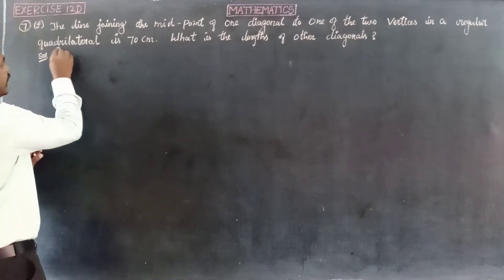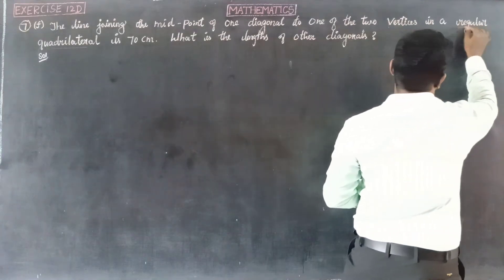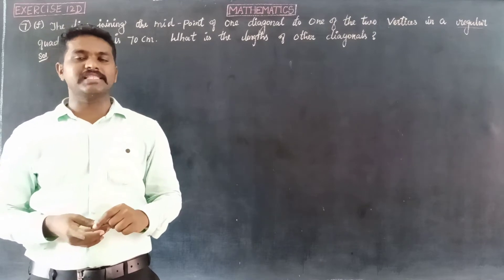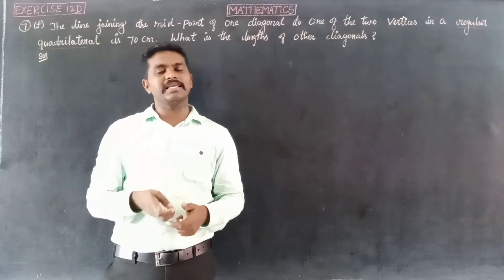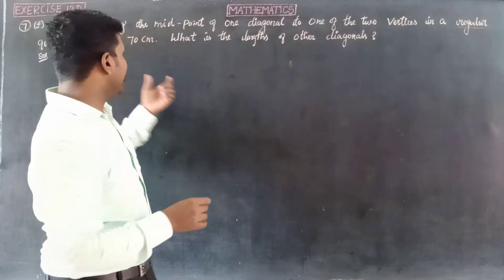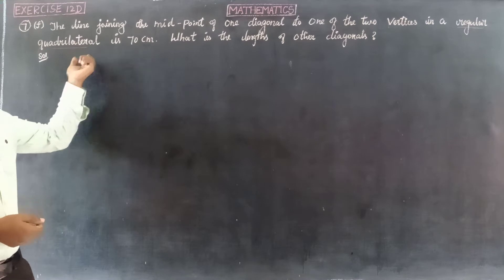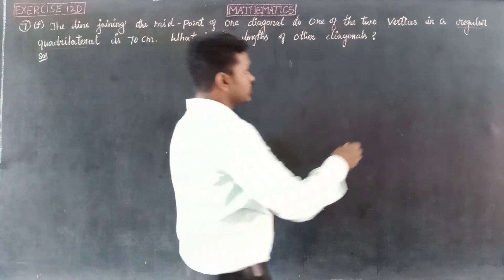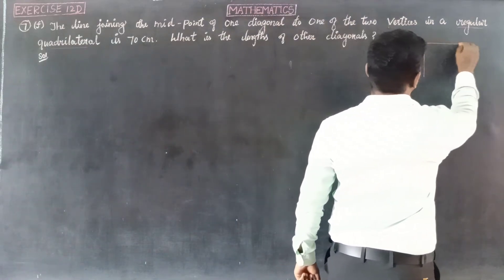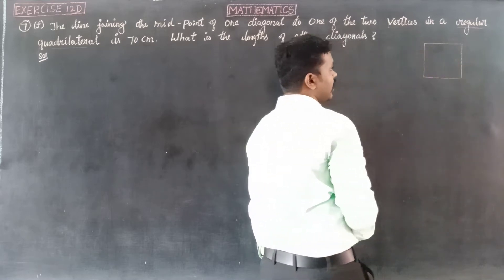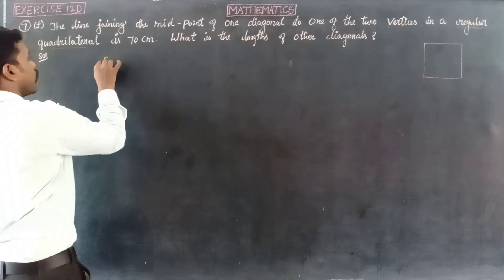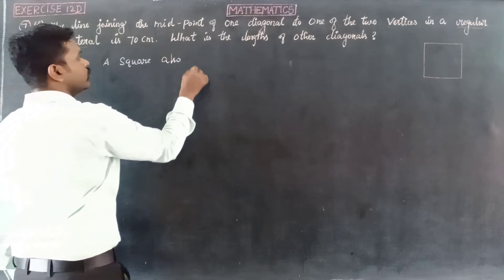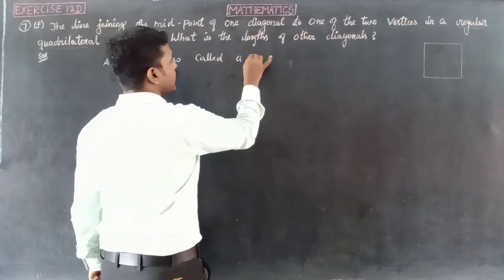A very important segment here is 'regular quadrilateral.' A regular quadrilateral is another name for a square. A regular polygon has all sides and angles equal. So a regular quadrilateral has four equal sides and four equal angles — making it a square. A square is also correctly called a regular quadrilateral.